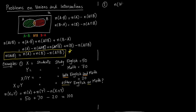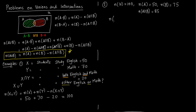Let us do the second example — slightly more involved. The universal set is of size 100, number of elements in A is 50, number of elements in B is 75, and we are also given that number of elements in A union B is 85. We are asked to compute the number of elements in A union B complement.